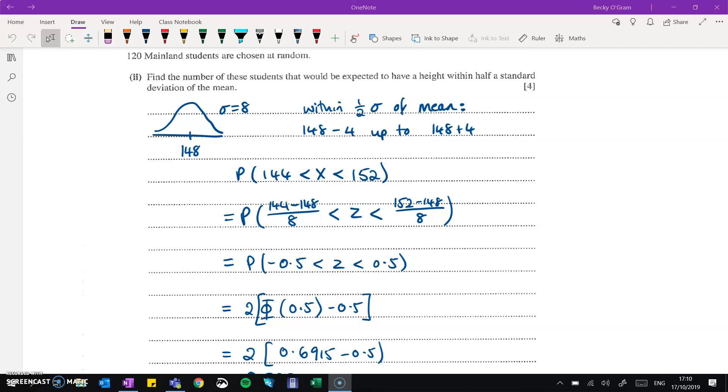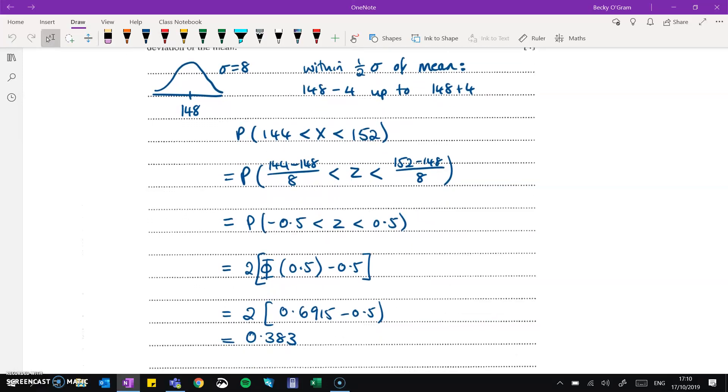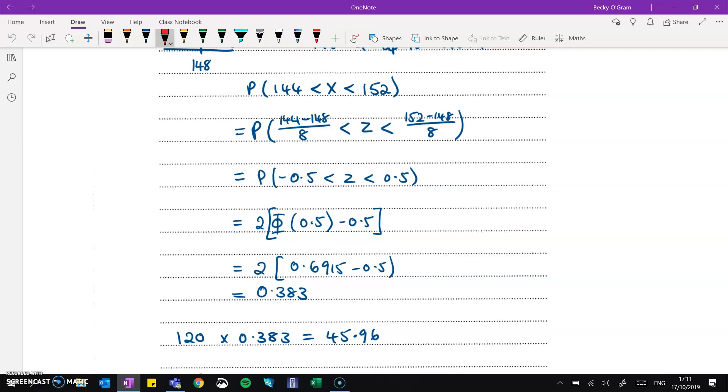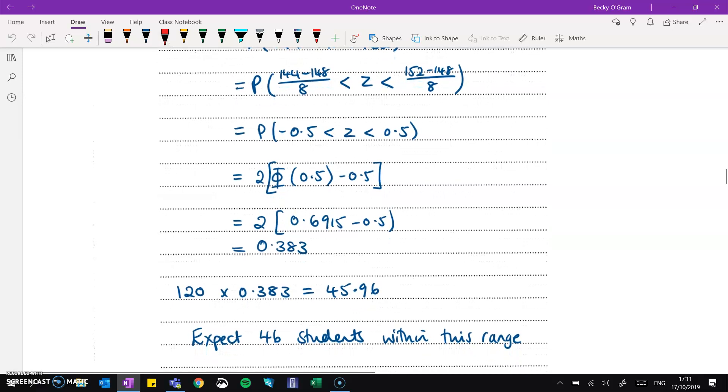Part 2 is asking us to find an expected value. So first of all, we need to find the probability that they lie within half a standard deviation of the mean. So half a standard deviation would be 4. So we can go 4 above 148 or 4 below 148. So we're looking at this range here, which we just convert to finding the probability that X is between 144 and 152. So the next steps are just working through that normal distribution question, working out the phi value. We can just do half of that range and then double it because it's symmetrical and we get 0.383. Now that's the probability of it happening. We want an expected value from the 120 students. Multiply it by that probability and we can expect 45.96 or if we're rounding to a whole number of students, 46 students within that range.